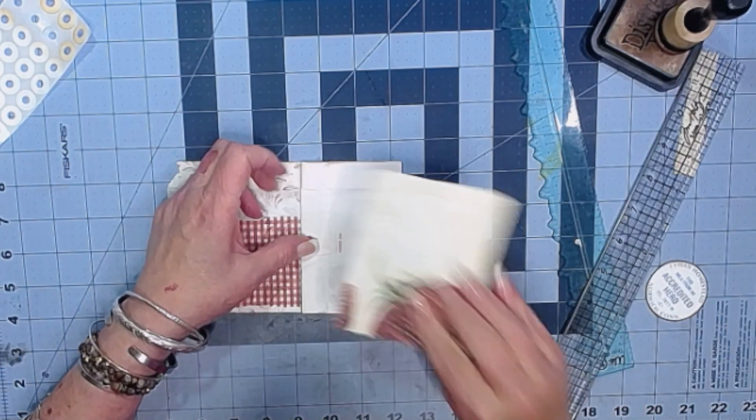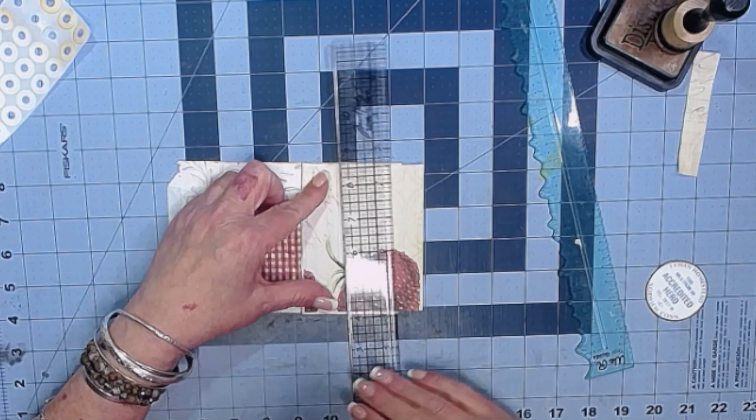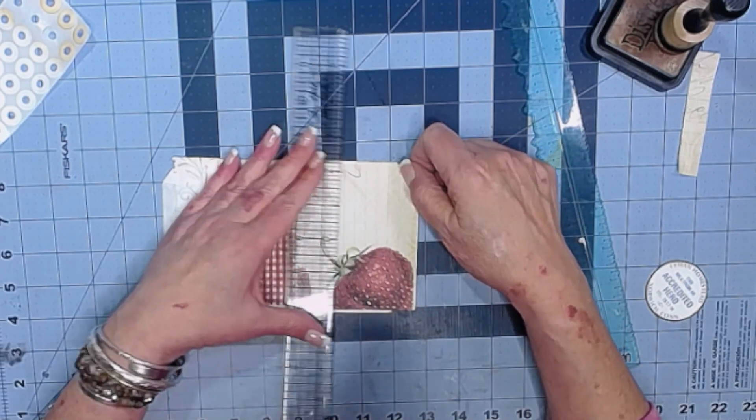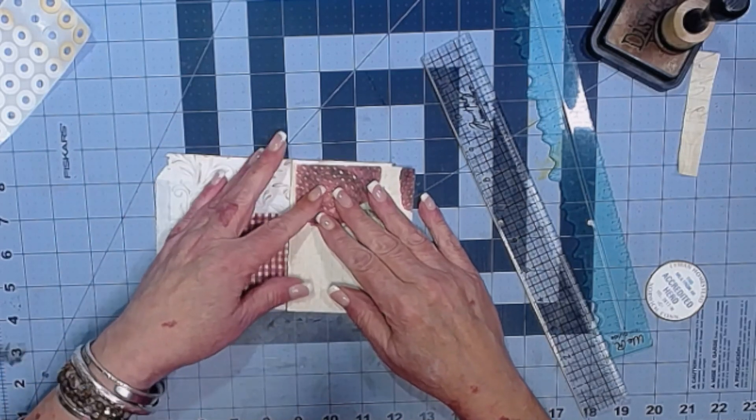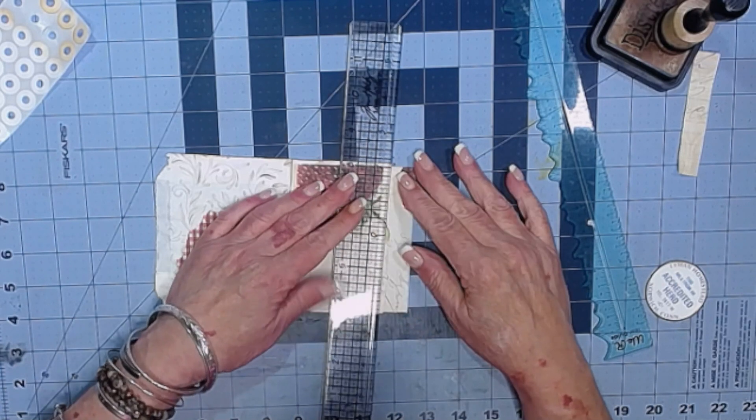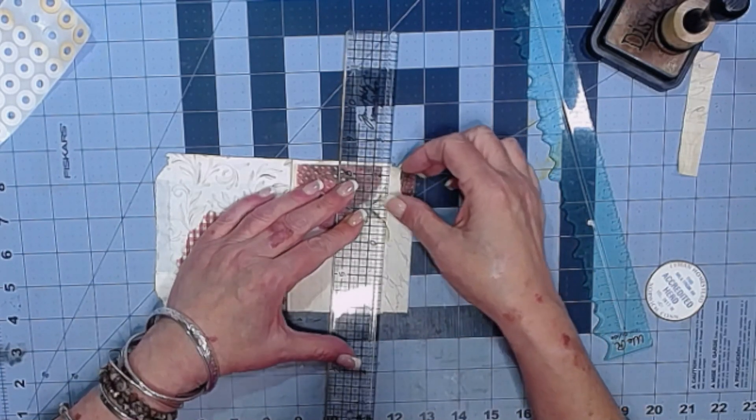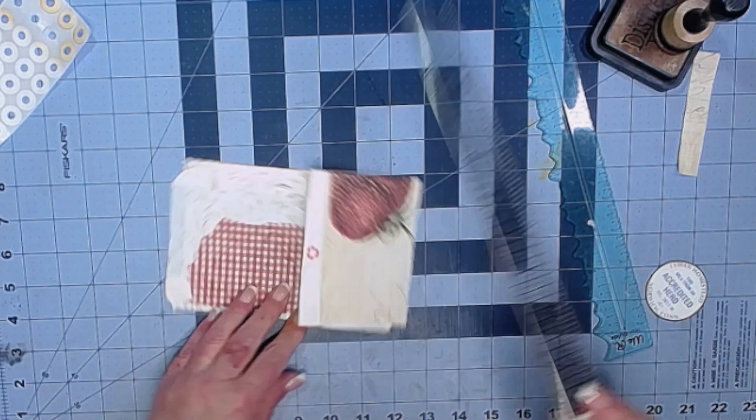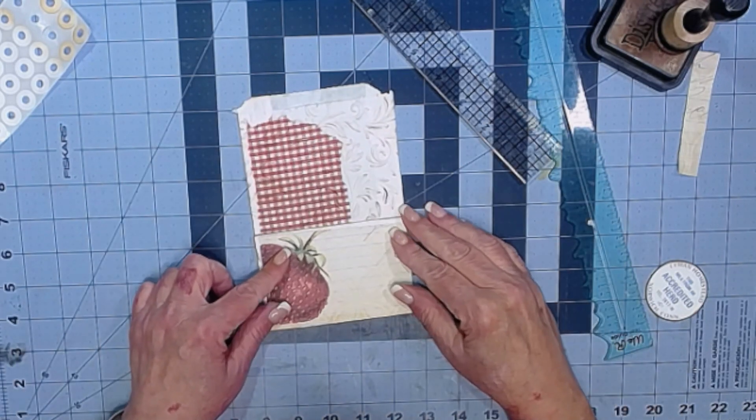So I'm just going to tear this down to be slightly smaller than our pocket. Eyeballing it all the way. I want the white to show a little bit but I do want to cover that red insignia. I think I'll do the top because I want to see my strawberry. I don't want to tear the bottom of my strawberry off. It's so luscious and giant. The images from this kit came from Julie at the Old Design Shop. Also linked down below. She has the most awesome digitals and digital ephemera images.